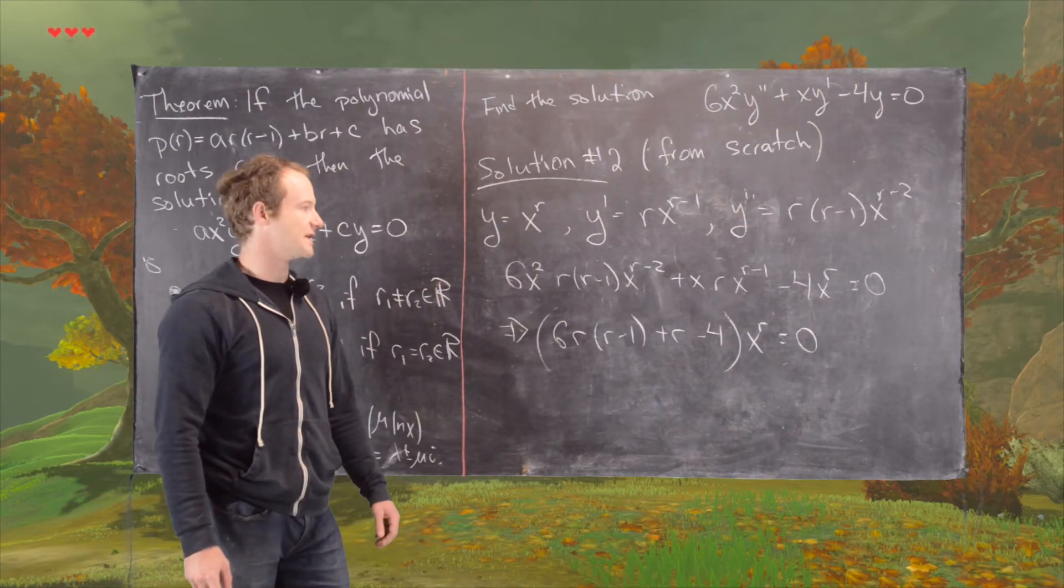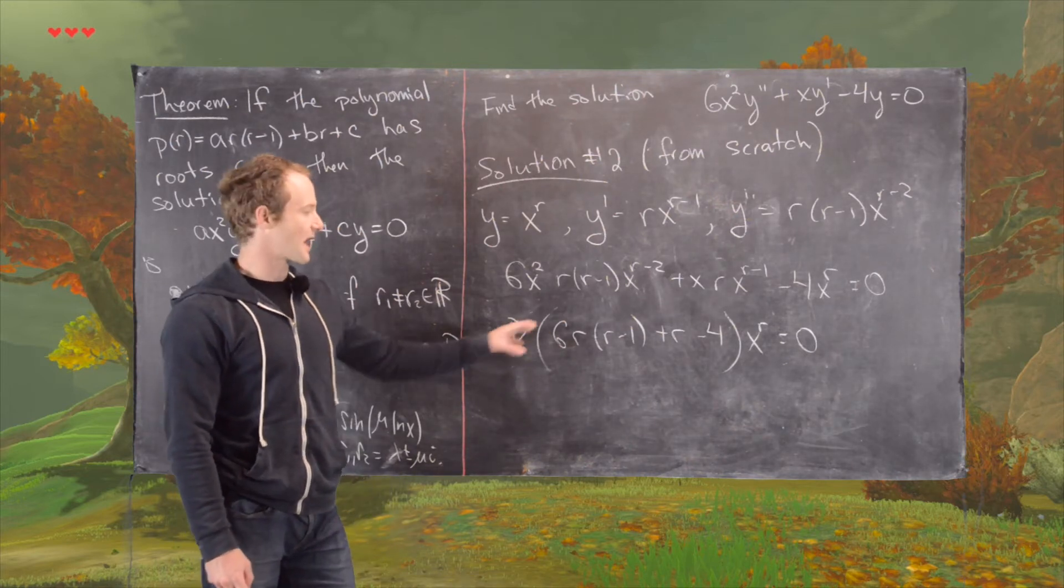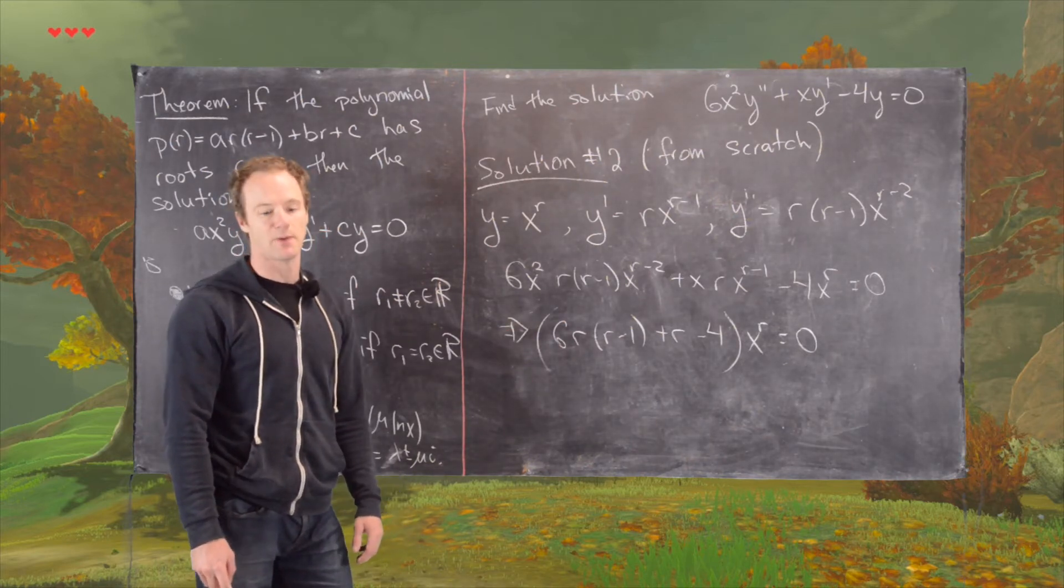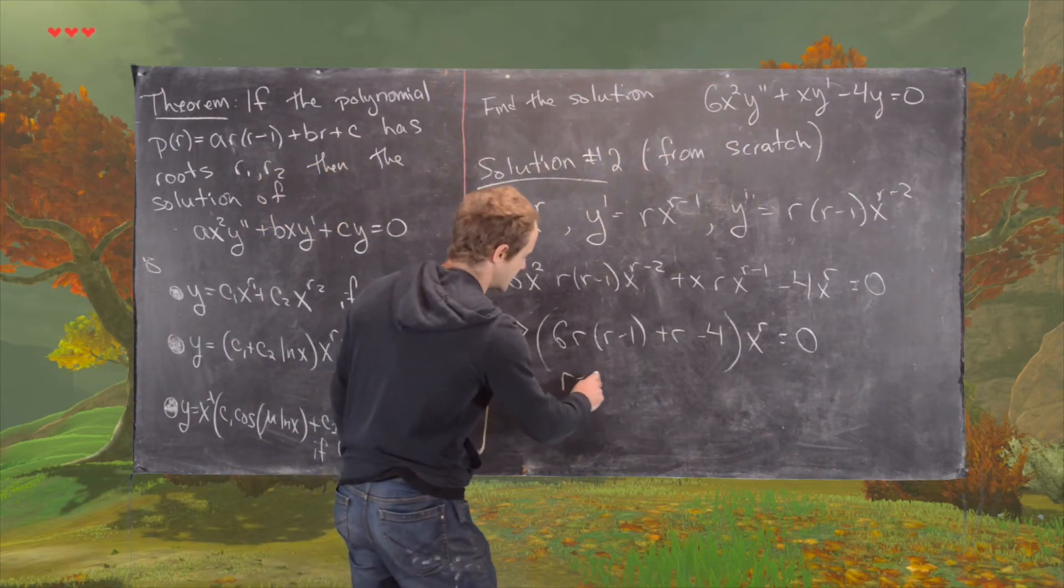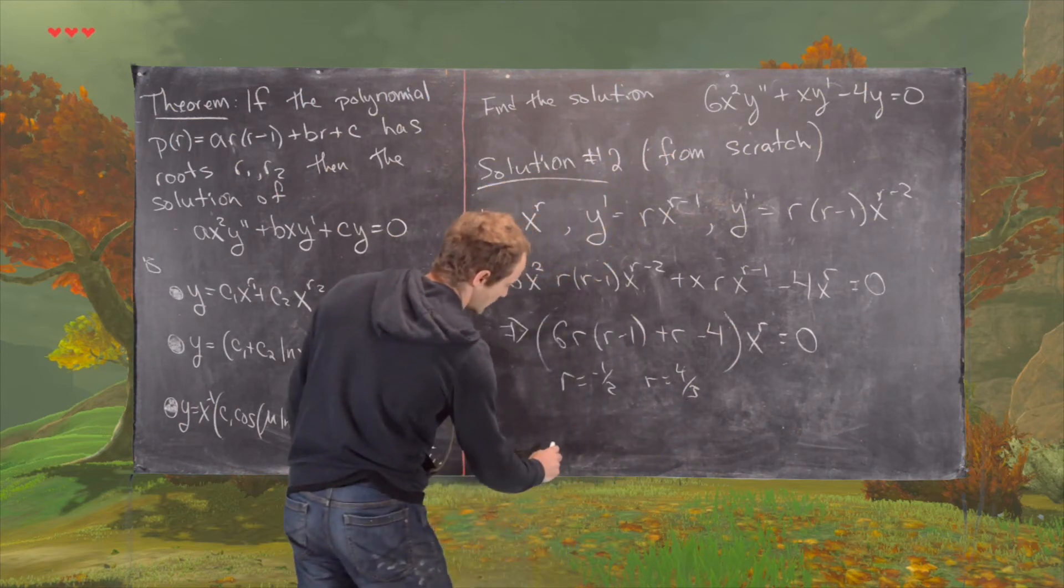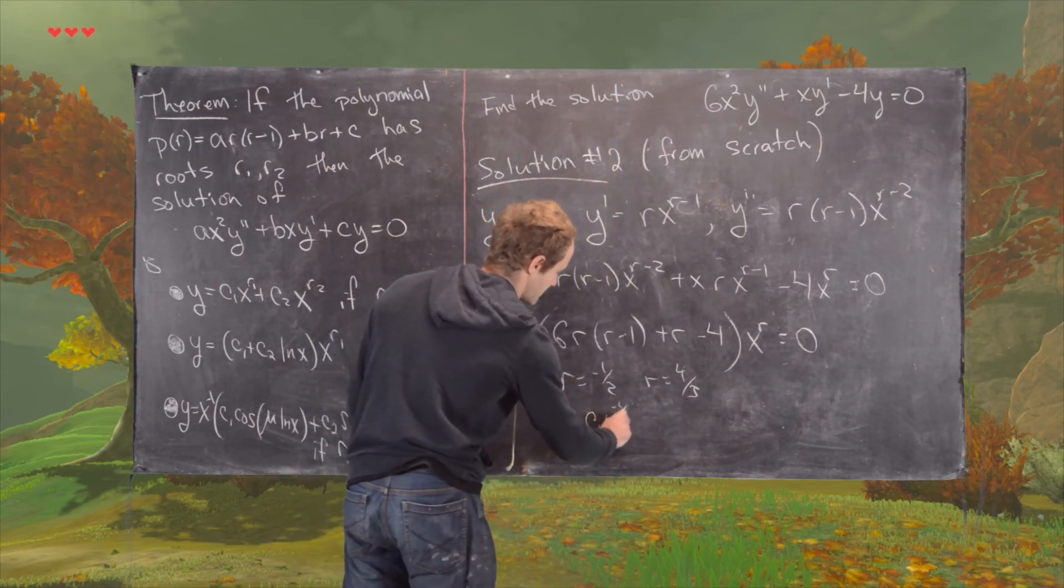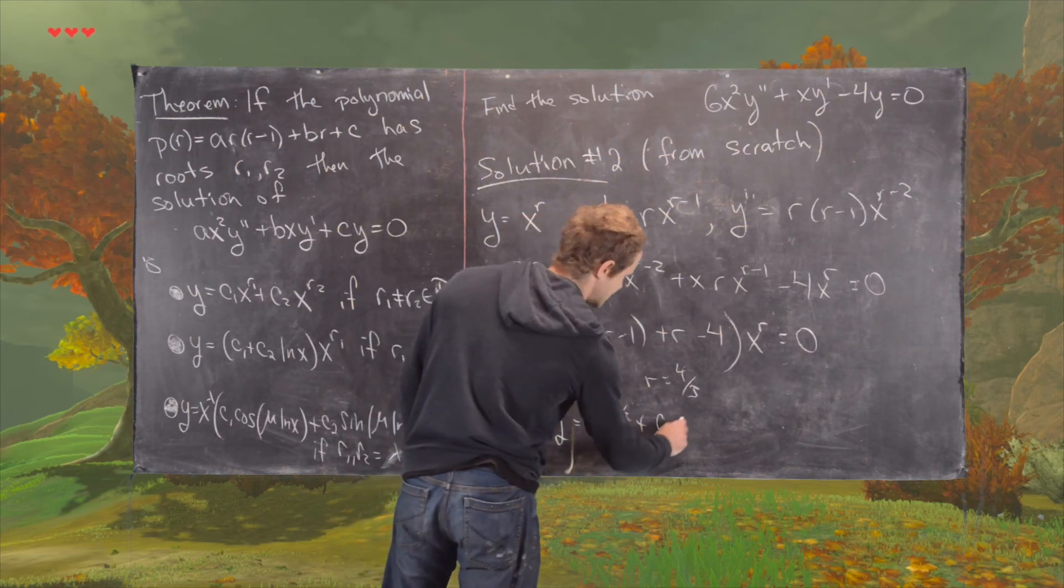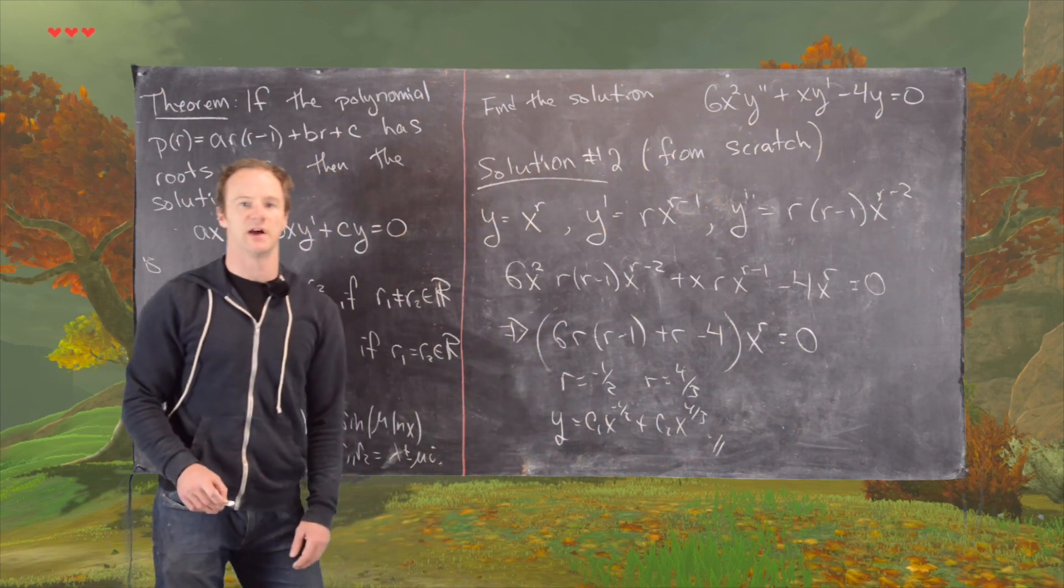It's also never discontinuous, so really we just need to look for roots of this polynomial, but I won't check that because that's the same polynomial that we had before, and I'll just recall that my roots here are negative half and four-thirds, which gives me the same solution that I had previously. So C1 X to the minus half plus C2 X to the four-thirds, and that's the final solution.